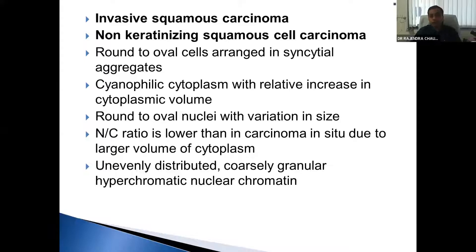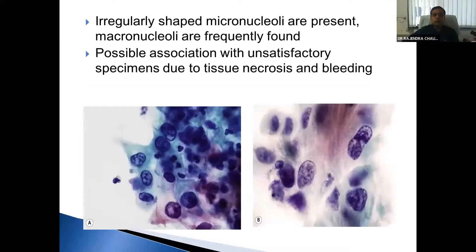The next category is invasive squamous cell carcinoma. The first type is non-keratinizing squamous cell carcinoma: cells are round to oval, arranged in syncytial aggregates, with cyanophilic cytoplasm. The NC ratio is comparatively decreased due to the relative increase in cytoplasmic volume — a change from CIN. The nuclei are round to oval with variation in size. Chromatin distribution is uneven, coarsely granular, and the nuclei are hyperchromatic. The chromatin is irregularly dispersed and micronucleoli can be seen, along with chromatin clumping.